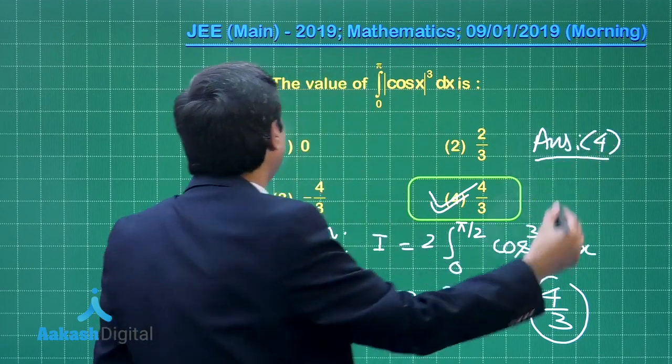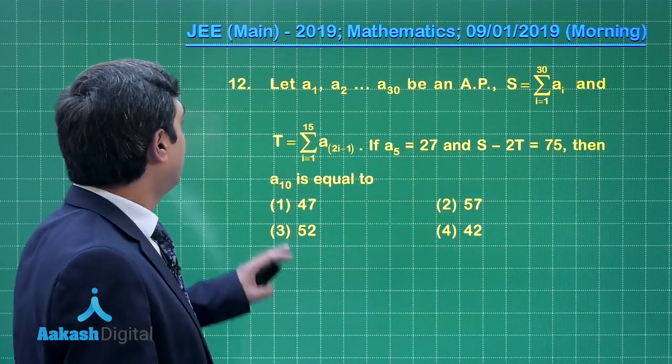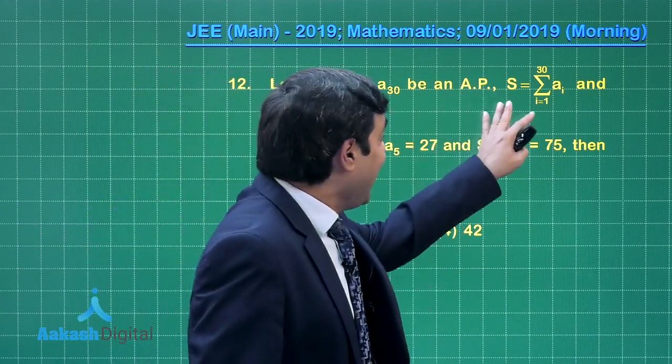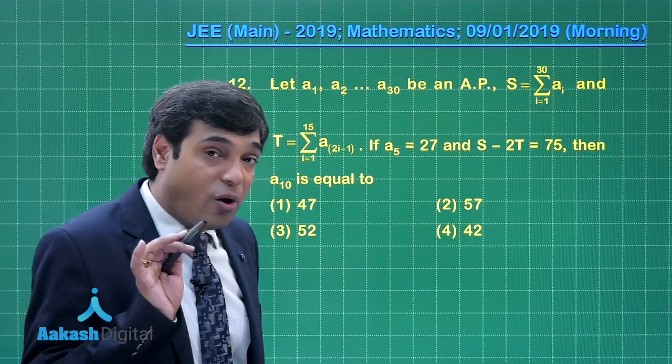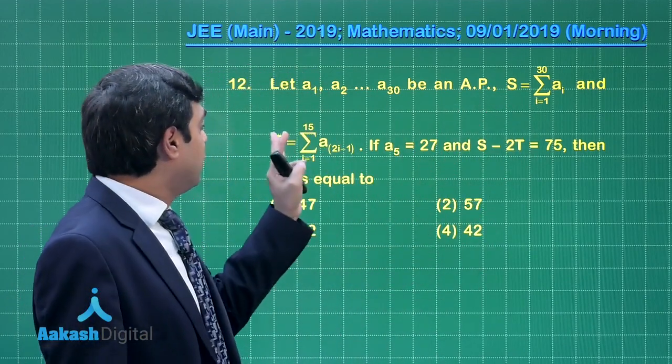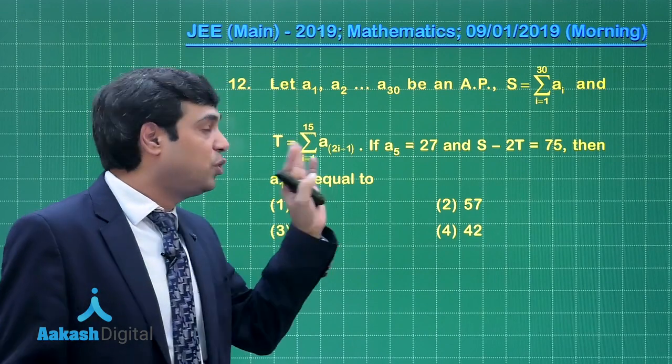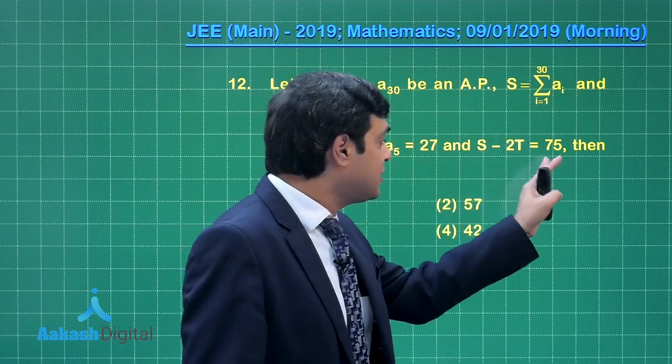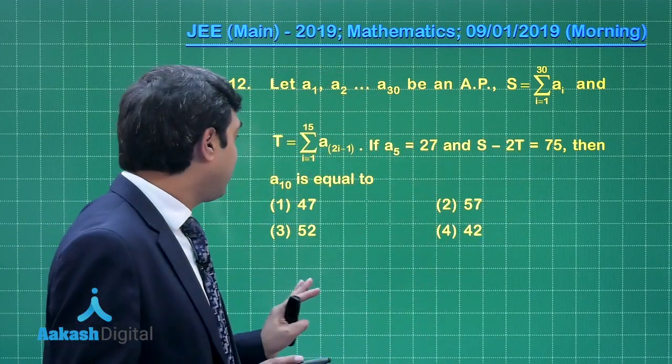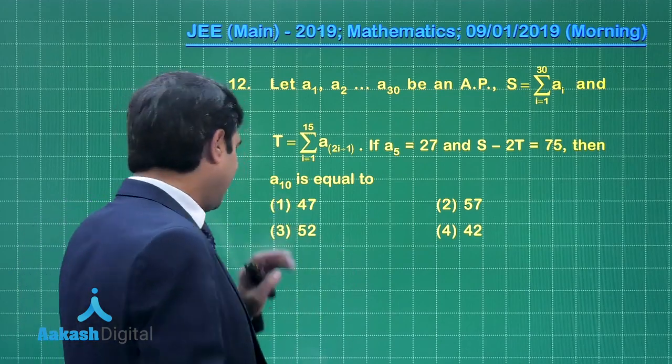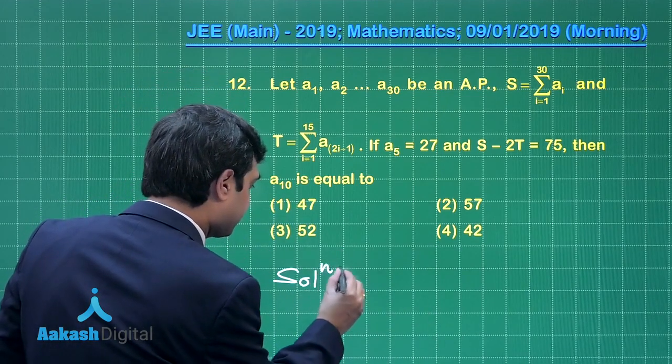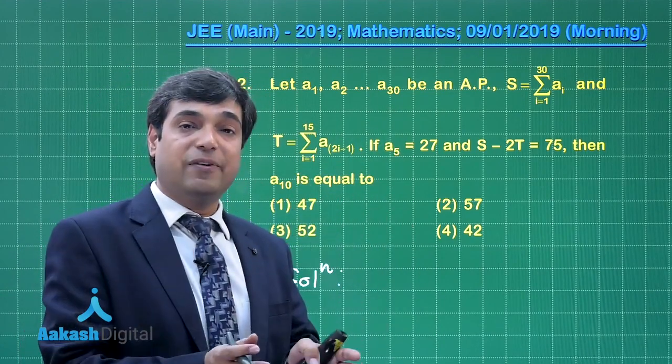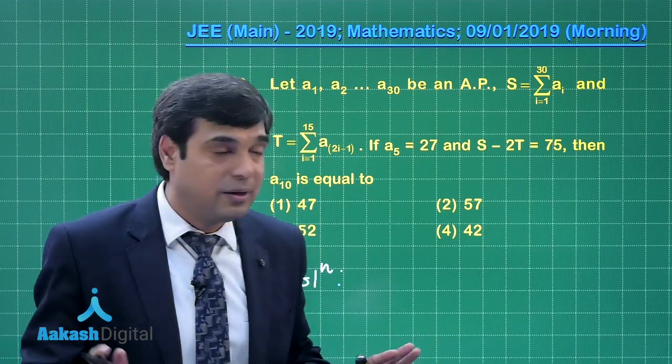Let us move on to the next question, question number 12. Let a₁, a₂, ..., a₃₀ be in AP. S is summation i=1 to 30 of aᵢ. T is summation i=1 to 15 of a₂ᵢ₋₁. Then a₅ is mentioned as 27, S - 2T is mentioned as 75. We have to find a₁₀. Question from AP, let us plan. I'm sure this would be easier. AP is a₁, a₁+d, a₁+2d, and so on.